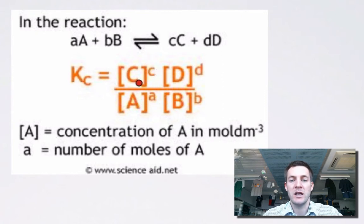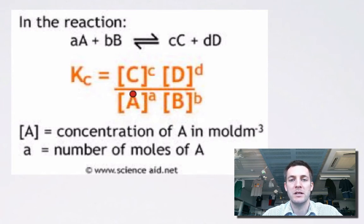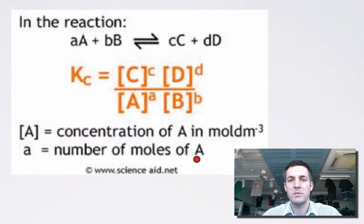Because equilibrium constant expressions measure concentrations, they only deal with substances that are either in solution or are gases — things we can measure in moles per dm³. Any pure liquid or solid whose concentration effectively doesn't change won't appear in an equilibrium constant expression. When writing these expressions, you must remember not to include anything that's solid or liquid.